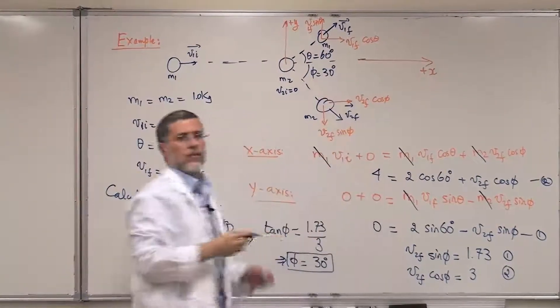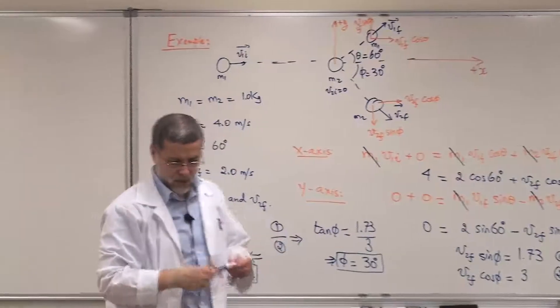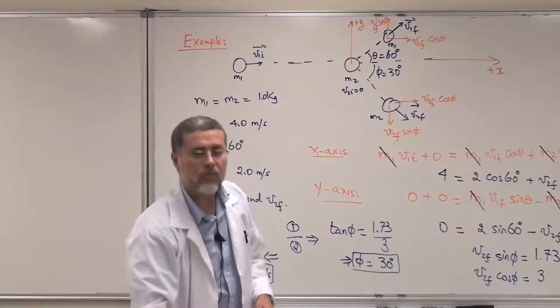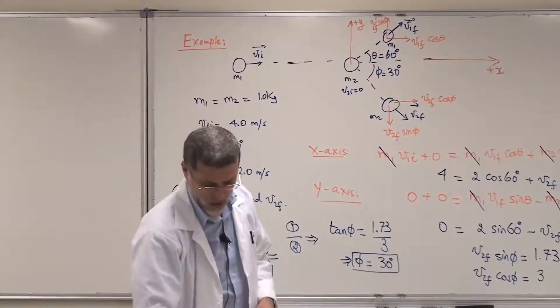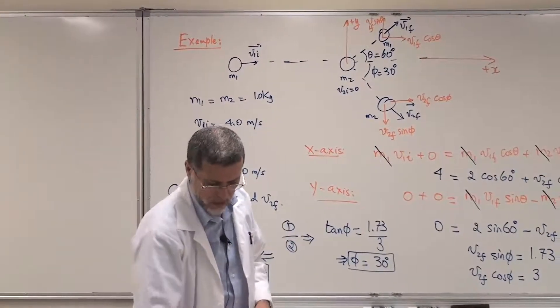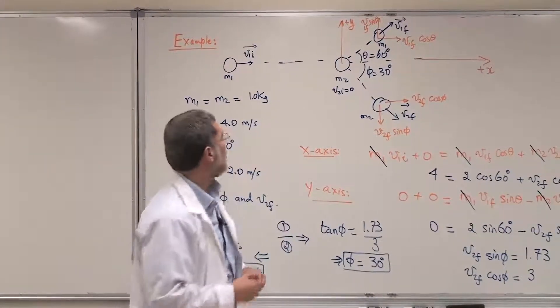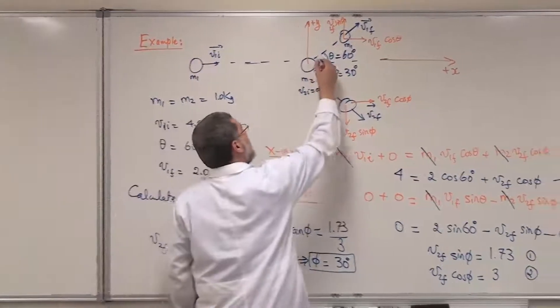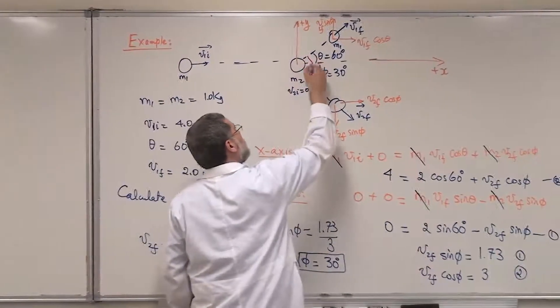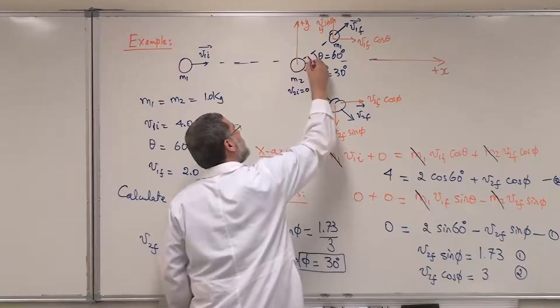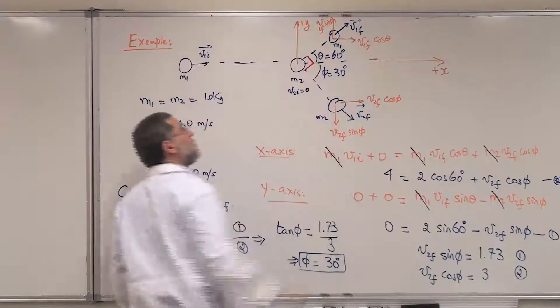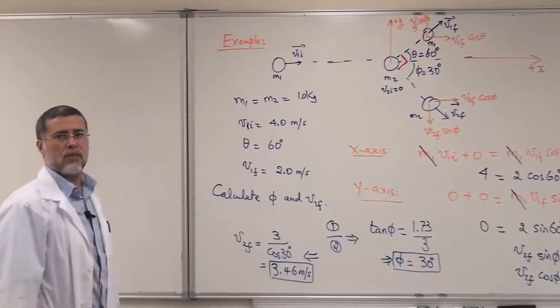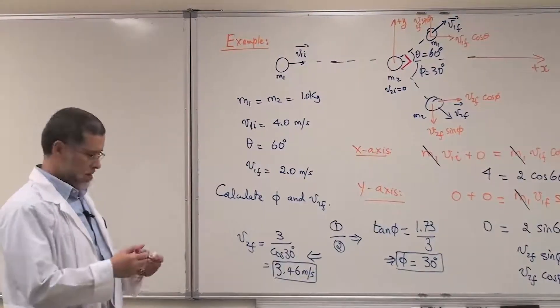Notice a very important result: when you have a glancing collision and the two masses are equal, the angle between the two outgoing velocities is always 90 degrees. Here, 60 plus 30 gives you 90.